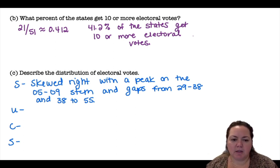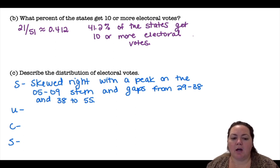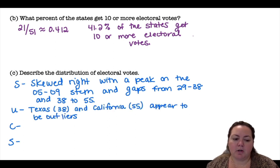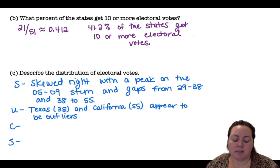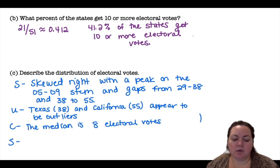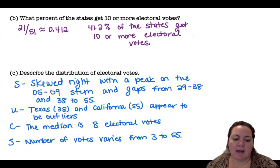This can sometimes be a little challenging. It's skewed right with a peak on the 5 to 9 stem, and gaps from 29 to 38 and then 38 to 55. Some unusual features: Texas with 38 and California with 55 appear to be potential outliers. The median is 8 electoral votes, and the spread varies from 3 to 55.